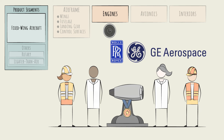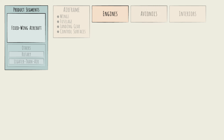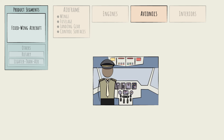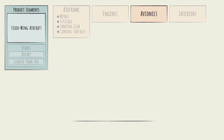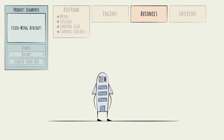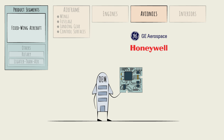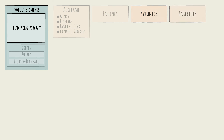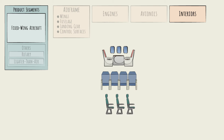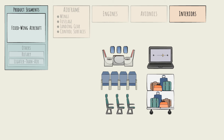Another set of key components are the various avionics — control and navigation systems. These can range from simple sensors to advanced autopilot software. Airframers may develop their own avionics, or use solutions developed by avionics providers like Honeywell Aerospace. GE plays here as well. Last, there are the interiors: seats, in-flight technology, and cargo bays.